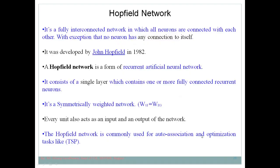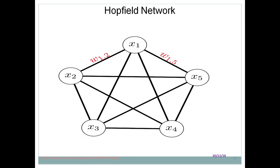The Hopfield network is a type of recurrent ANN in which all the neurons are fully interconnected with each other. It is one kind of recurrent ANN in which all neurons are connected with each other. Importantly, no neuron has a connection to itself — this is a key feature of the Hopfield network.